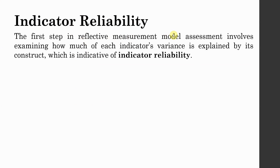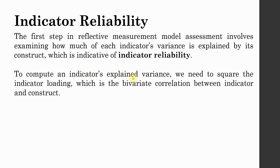The first step in reflective measurement model assessment involves examining how much each indicator's variance is explained by its construct, which is indicative of indicator reliability. To compute an indicator's explained variance, we need to square the loadings, as seen in earlier videos. That loading is actually the bivariate correlation between the indicator and the construct.